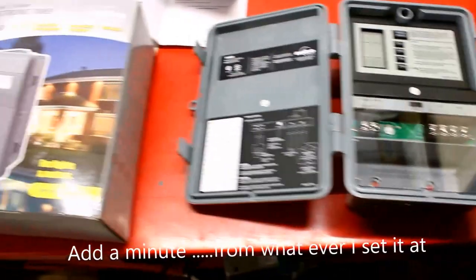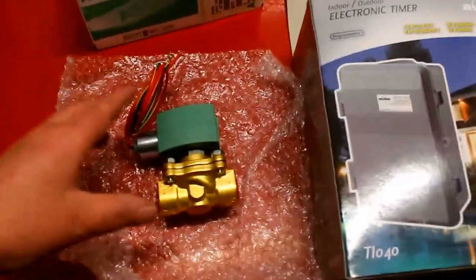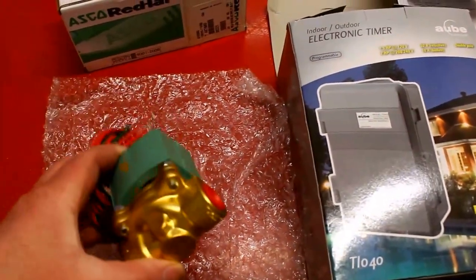Then the other main component is the solenoid valve. This is an Asco Red Hat. It's a pretty commonly used solenoid valve.